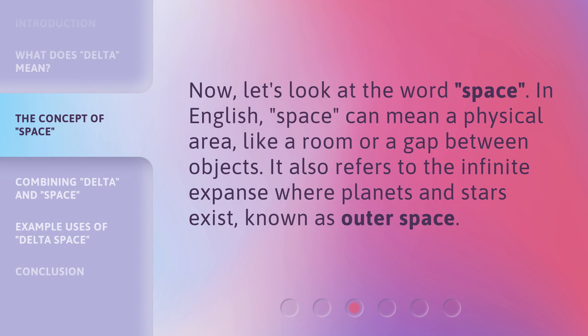Now, let's look at the word space. In English, space can mean a physical area, like a room or a gap between objects. It also refers to the infinite expanse where planets and stars exist, known as outer space.